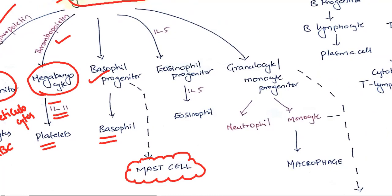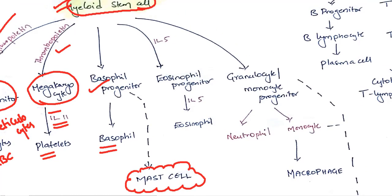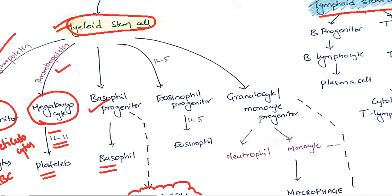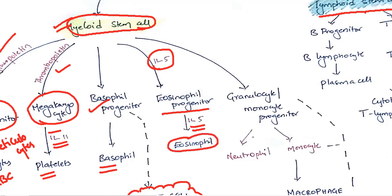Through myeloid stem cell we also get eosinophil progenitor with the help of interleukin-5. And again with the help of interleukin-5, we will be getting eosinophils.